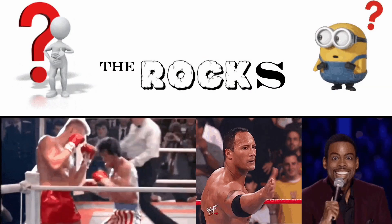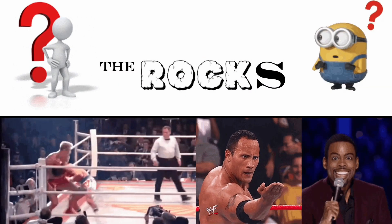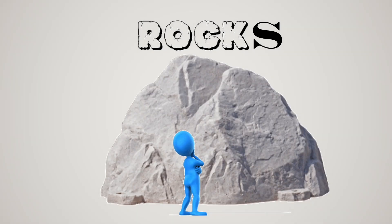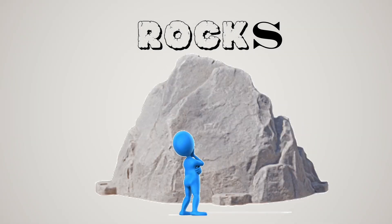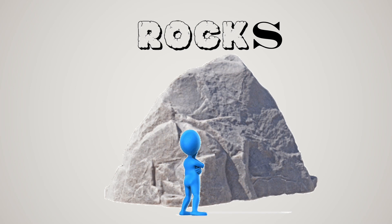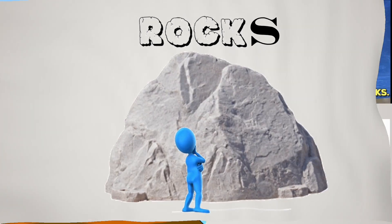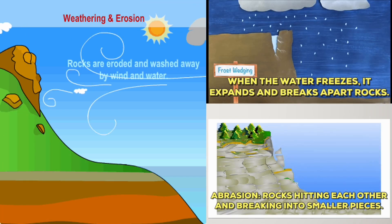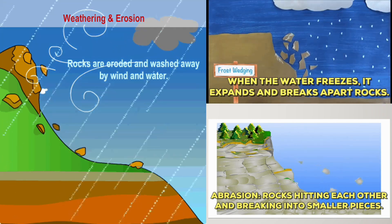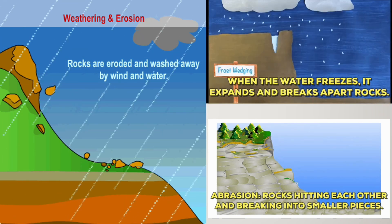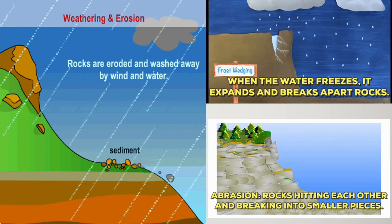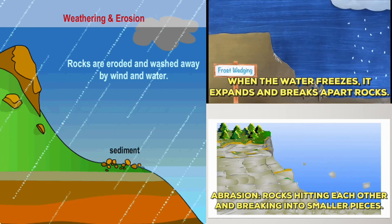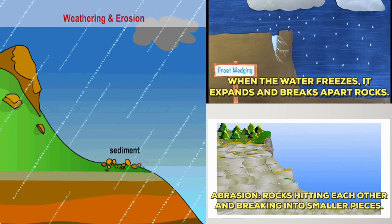Soils come from rocks — not the music kind, but actual geological rocks. Rocks are the parent material of soils. The action of sun, water, ice, wind, and plants break huge pieces of rock to form soil. This process is called weathering. It is a slow process, and it can take thousands of years for rocks to turn into soil.